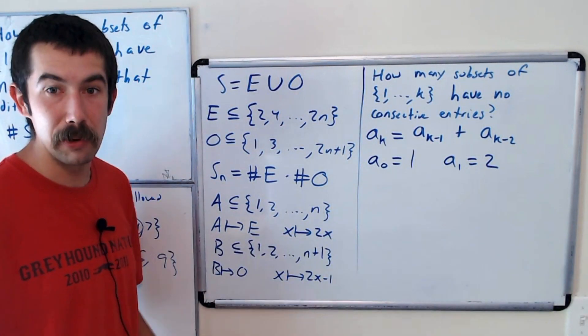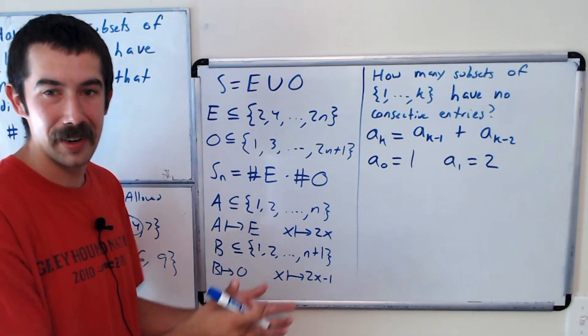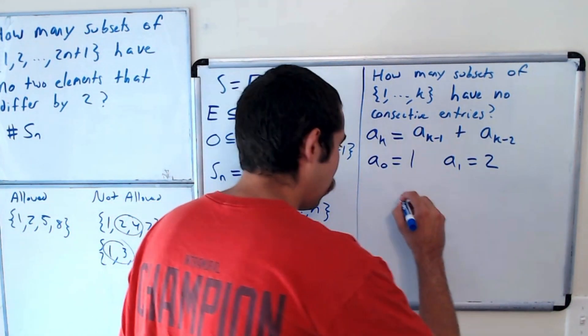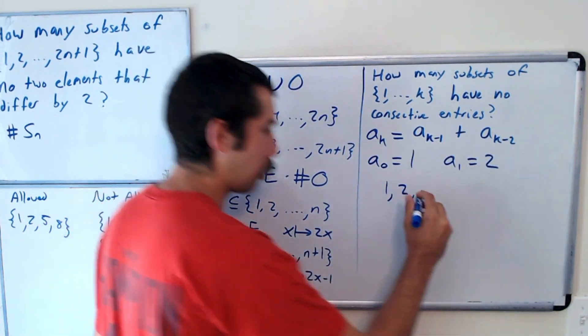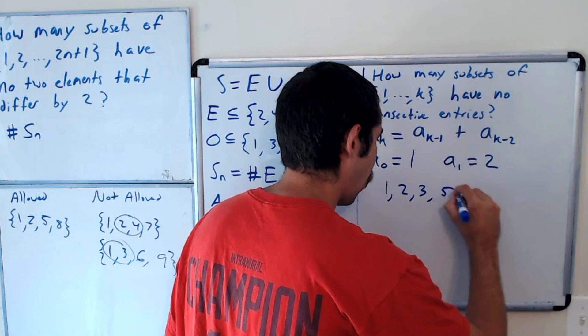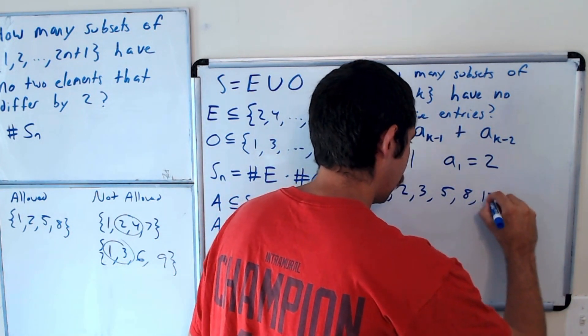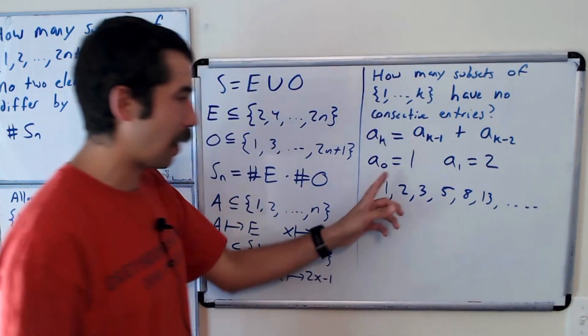Okay, and so let's write out a few terms in this A sequence, and we can compare it to the Fibonacci numbers. So it'd be 1, 2, and then to get the next one, we just add the previous. So 3, 5, 8, 13.